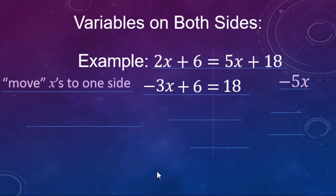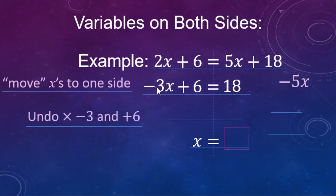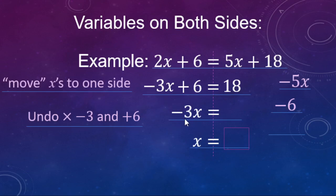Now we have a two-step equation that looks really similar to the one we just finished. We want to get x by itself, so we need to undo the multiply by negative 3 and the plus 6 being done to the x. We'll start by undoing the plus 6 with a minus 6. Negative 3x plus 6 minus 6 — the 6's cancel — and 18 minus 6 is going to make 12.